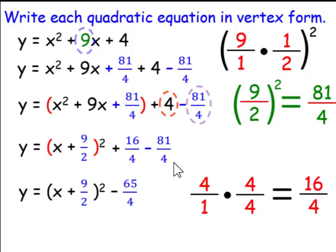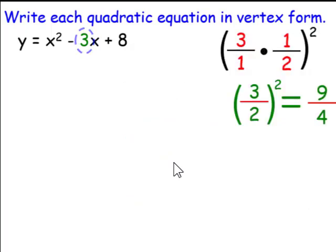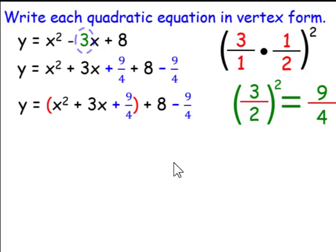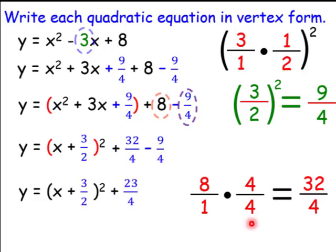Let's try one similar to this previous one. We will take half of the b term and square it, which will give us 3 over 2 squared, which is 9 over 4. We will add 9 over 4 and subtract 9 over 4. We have a perfect square trinomial. Its factored form is x plus 3 over 2 squared. We need 8 and 9 fourths to have the same denominator, so we take the 8, multiply top and bottom by 4, and we get 32 over 4. So 32 over 4 minus 9 over 4 is 23 over 4.